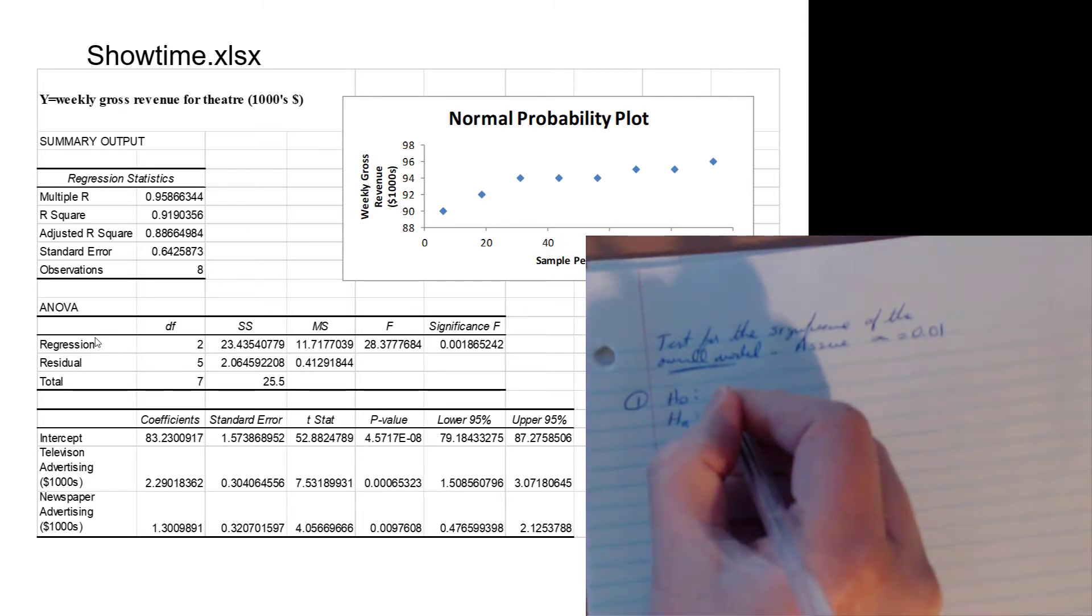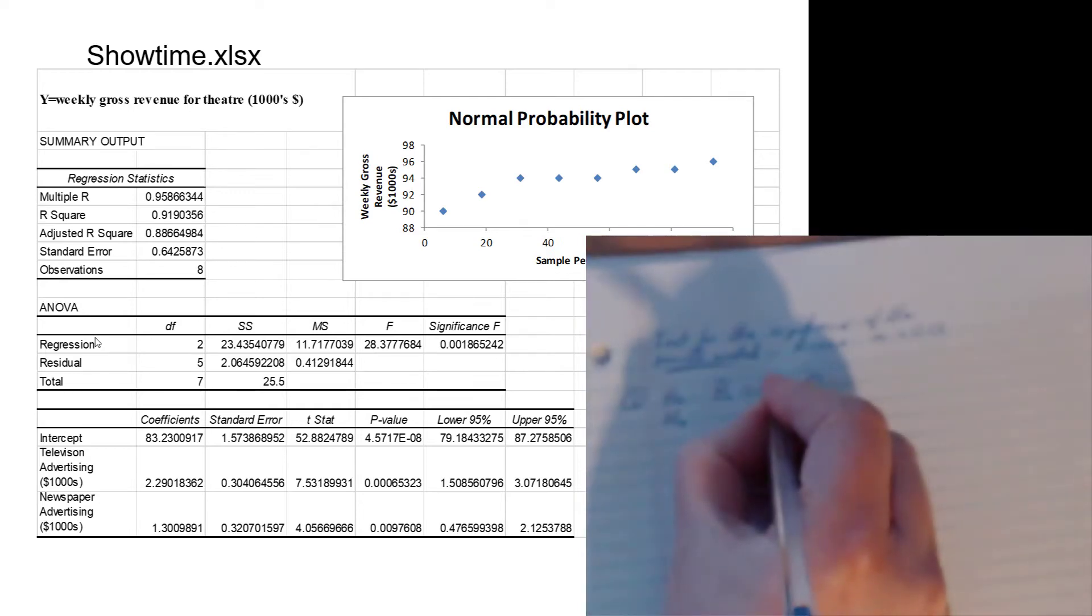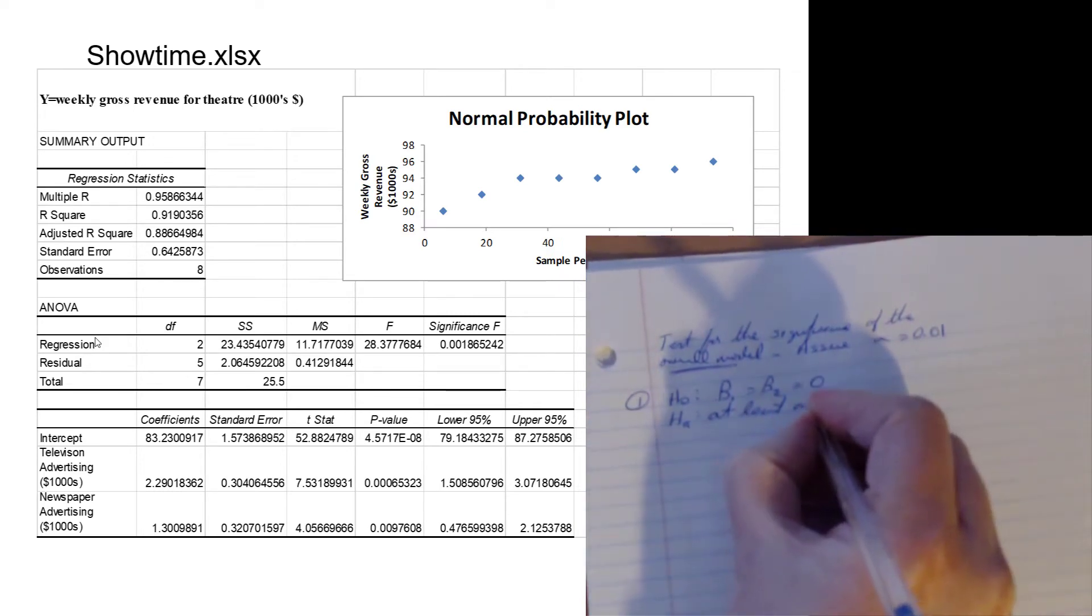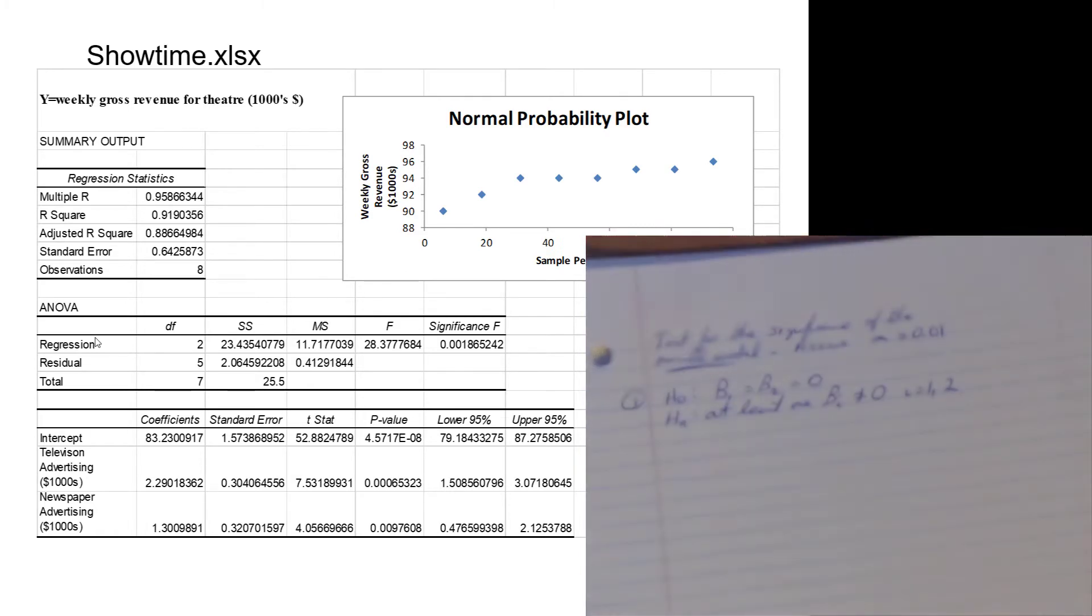We have two slopes: one slope for television advertising, one for newspaper advertising. So we have beta one equals beta two, and they're both equal to zero, and that means the model is not significant, or at least one of those betas doesn't equal zero. We have to specify those subscripts. If we're going to say at least one beta_i doesn't equal zero, we've got to say i equals 1, i equals 2.